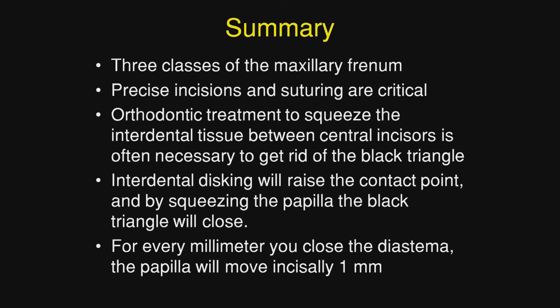There are three classes of the maxillary frenum. The first class is where you have a broad and fleshy, unaesthetic frenum but the interdental tissue appears to be normal gingiva. Class two means you have a broad and fleshy, unaesthetic frenum but the tissue in the papilla area looks like frenal tissue. The third is where the interdental papilla is missing. Orthodontic treatment to squeeze the interdental papilla between the central incisors is often necessary to get rid of the black triangle. As we showed on Dr. Kokich's case, interdental disking will raise the contact point, and by squeezing the papilla the black triangle will close because the tissue will come down. For every millimeter you squeeze the diastema together, the papilla is going to come down one millimeter.